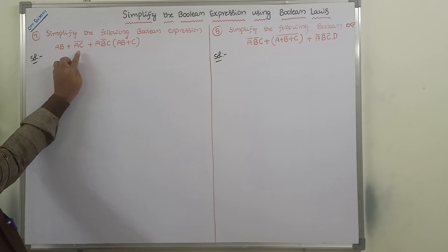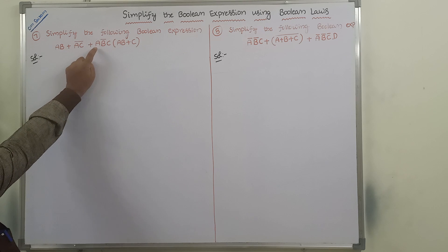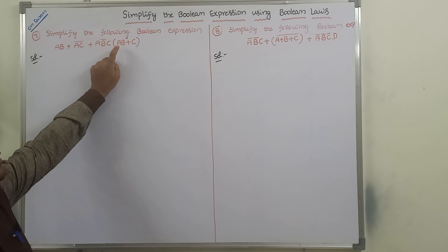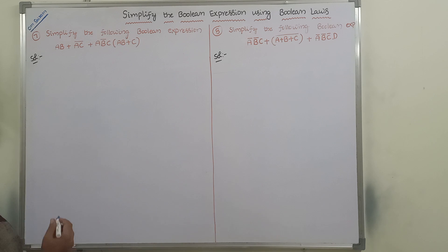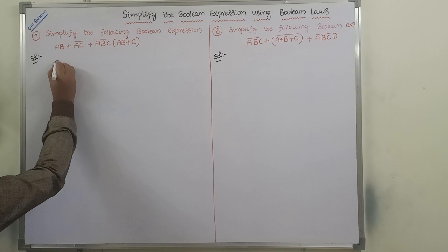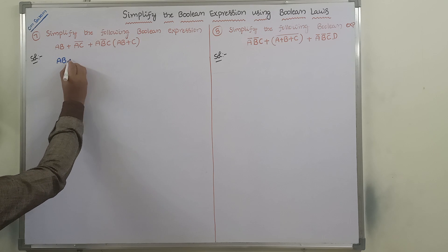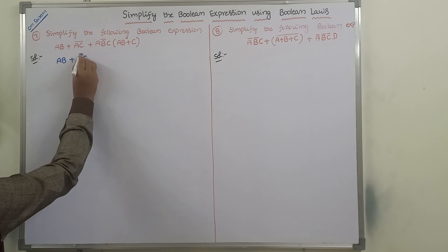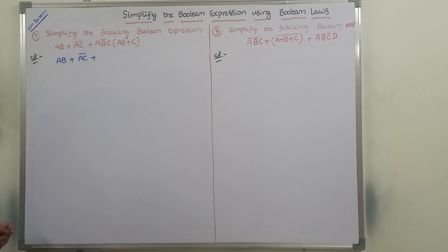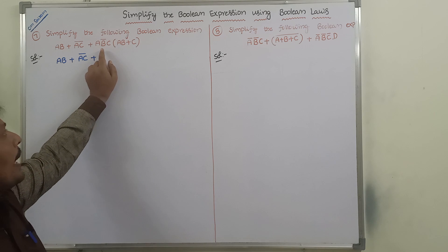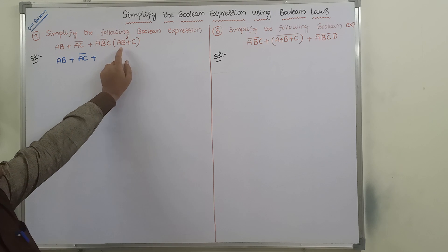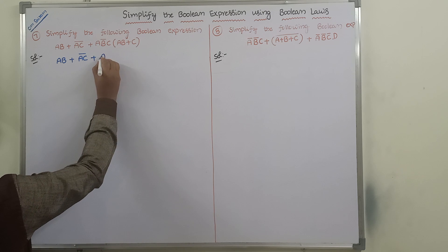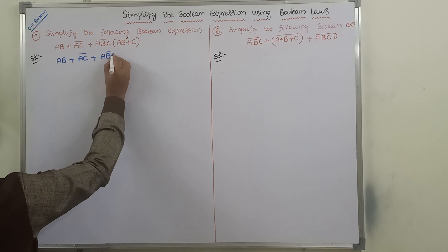The first expression is: (AB + AC) whole bar, plus A into B̄ into C into (AB + C). We have to simplify this boolean expression. So (AB + AC) whole bar, plus here we are multiplying this term with this term, and this term with this term — so A into B̄ into C.